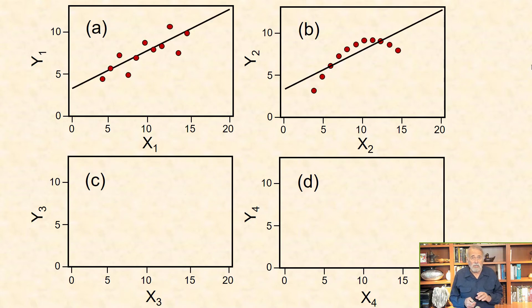The second plot, B, shows a smooth curve relationship that is not captured if summarized as a linear regression.